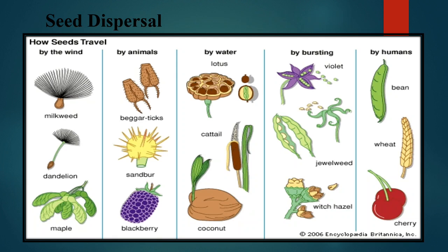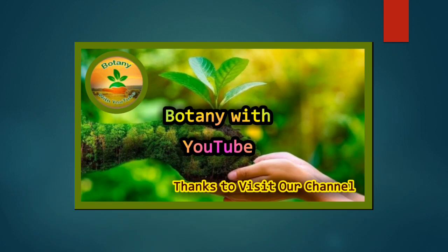Example of germination in gymnosperm plants: you can see the factors which help in seed dispersal — for example, by wind, by animals, by water, by bursting, and by humans. Thanks for visiting our channel; thanks for your attention. Good luck to all of you. Allah Hafiz.